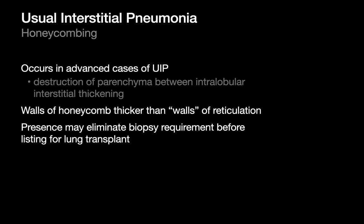Honeycombing can occur in advanced cases of UIP, where the reticular interstitial fibrosis — or intralobular interstitial fibrosis — has continued to progress into a more end-stage form. We start remodeling the lung in such a way that those reticulations now just have black space inside of them. That is honeycombing. When this happens, the walls of reticulation that are visible become thicker in appearance.